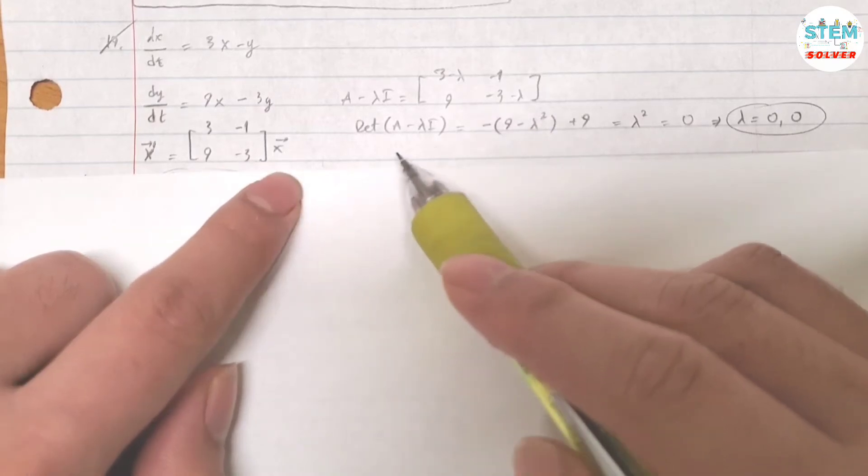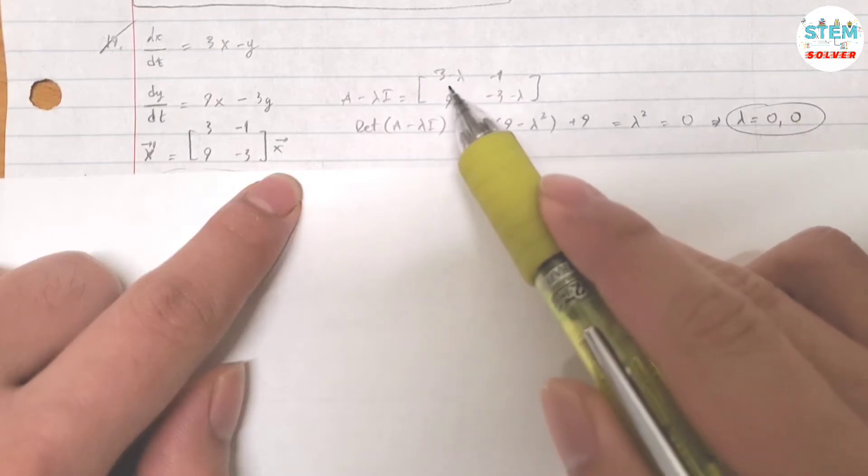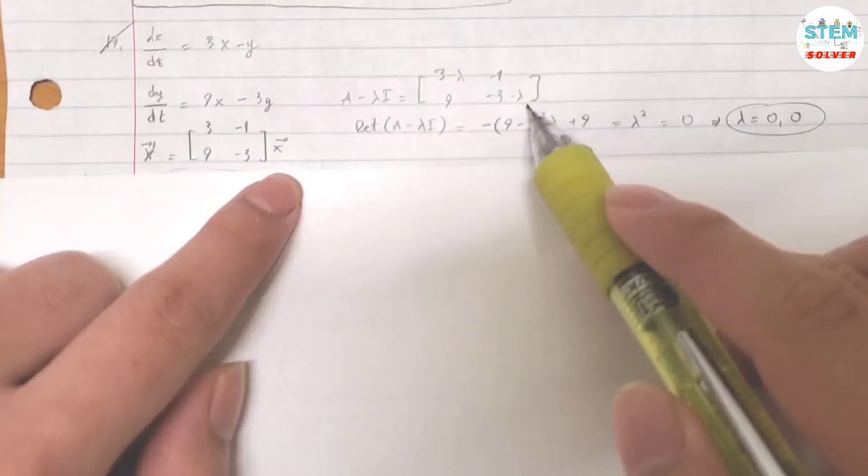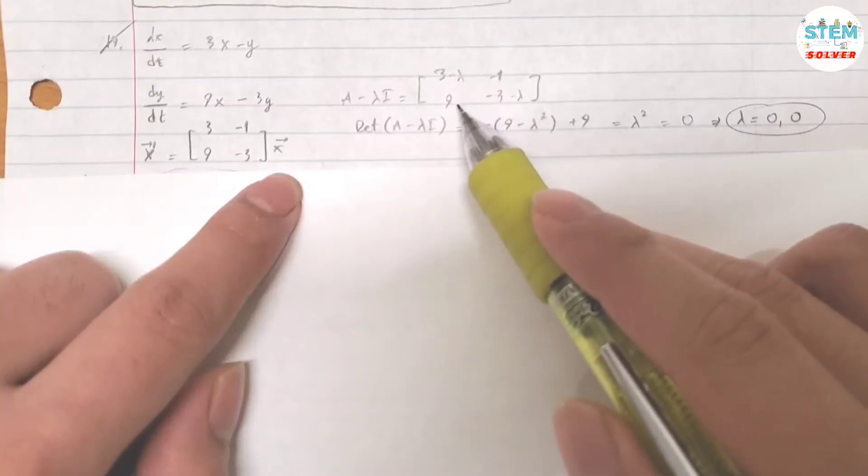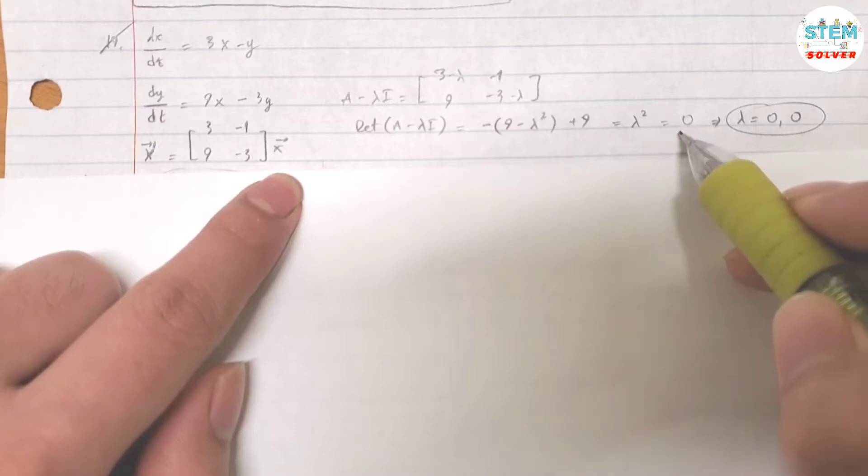Find the determinant of it. You will get (3 minus lambda) times (negative 3 minus lambda) minus negative 1 times 9. Simplify this and you get lambda squared equals 0. Solve for lambda: you get lambda equals 0 and 0. Here's your eigenvalue, and it is a repeated eigenvalue.